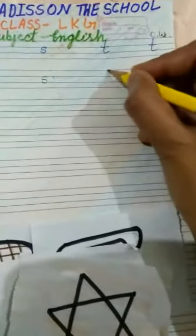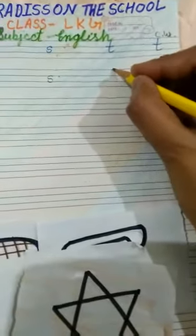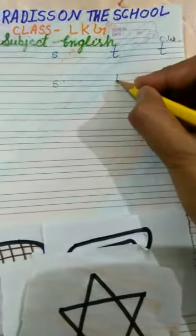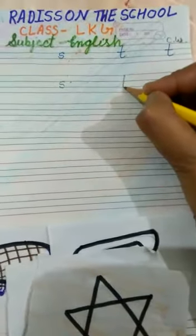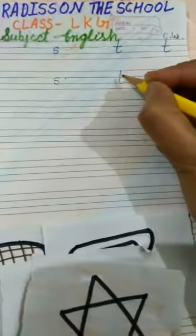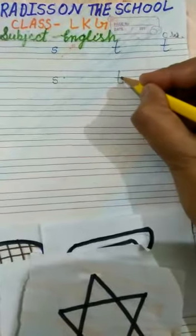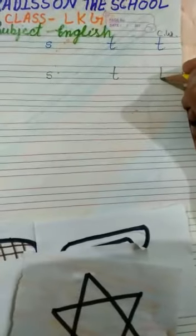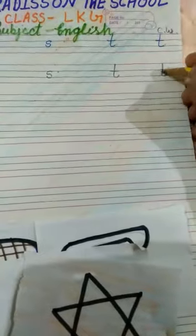Then T. This will be made in three lines: one straight line, then curve, then mid one cut. Like this.